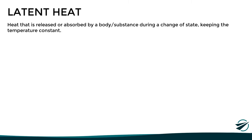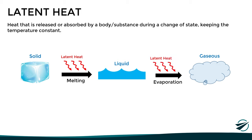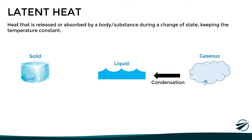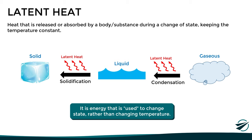Latent heat is defined as the heat that is released or absorbed by a body or substance during a change of state, while the temperature remains constant. For example, for water to change from solid to liquid state, latent heat is required. Similarly, to change from liquid to gaseous state, latent heat is also required. Since this latent heat is not used to change the temperature, it remains somewhat hidden inside the body or substance until it is eventually released when the opposite change of state takes place. For example, changing from gaseous to liquid state releases the latent heat that was absorbed during vaporization, and the same happens when water changes from liquid to solid state. In summary, latent heat is energy used to change state rather than temperature, and it is absorbed or released depending on the process involved.